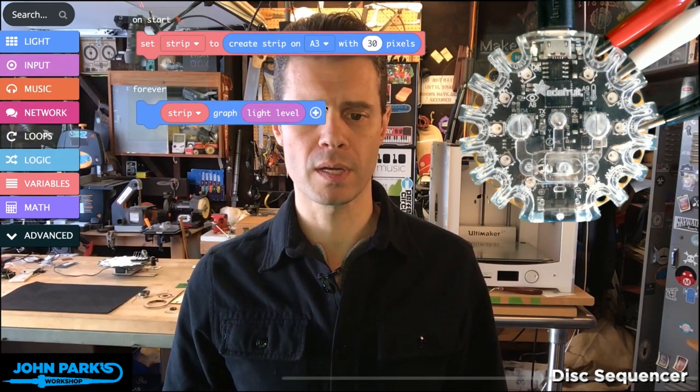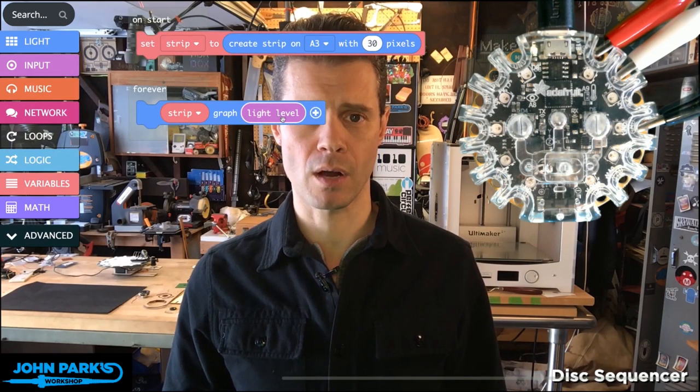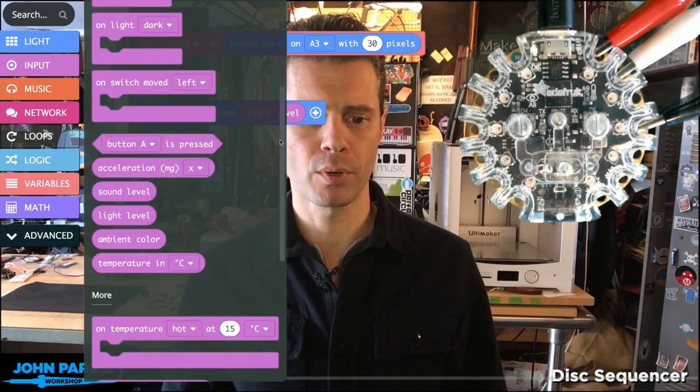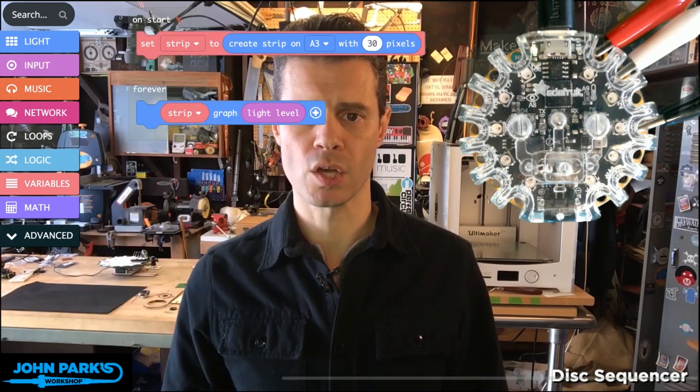All I'm doing is adding, instead of that zero, I'm graphing in a light level. I got that from Input and if we scroll down in Input you'll see light level.